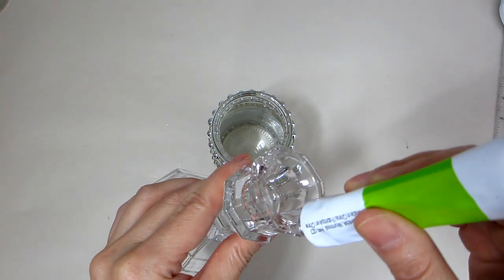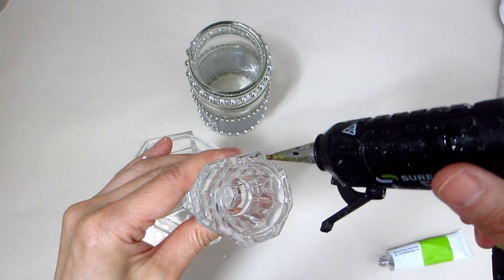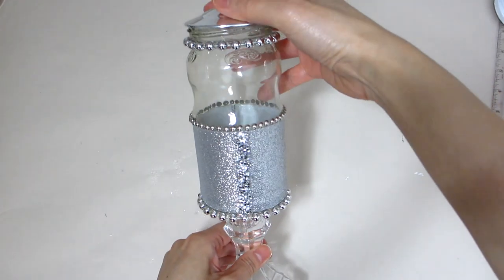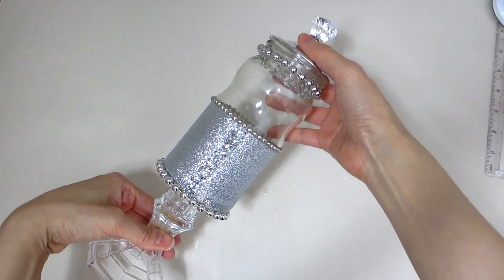To give this jar some height we will sit it on top of a glass candle holder using some fix-all and hot glue to adhere the jar to the candle holder. And here is what our second apothecary jar looks like.